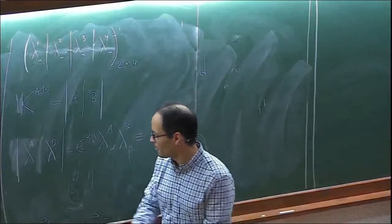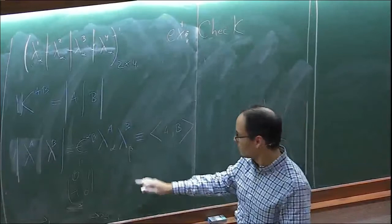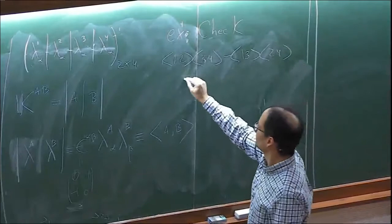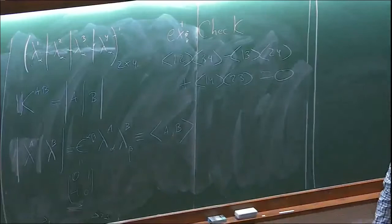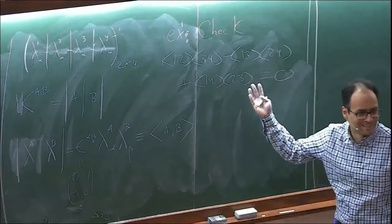An exercise for you: check that these objects satisfy the Plücker relation — bracket(1,2) bracket(3,4) minus bracket(1,3) bracket(2,4) plus bracket(1,4) bracket(2,3) equals zero. As the standard joke goes, there was a time in physics and math when you could get your name attached to an identity like this.